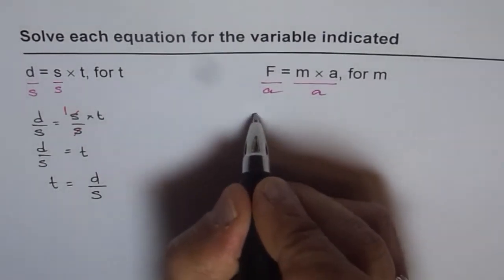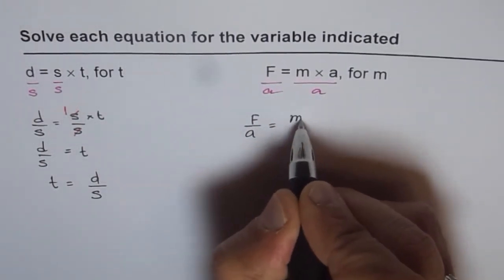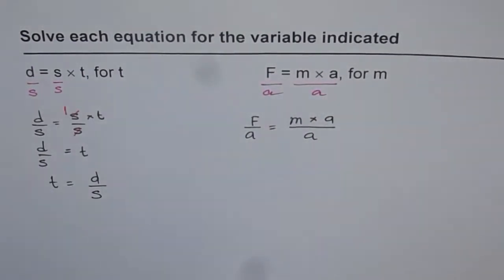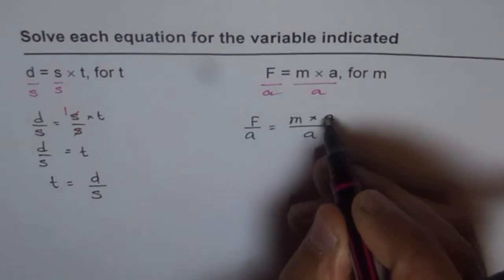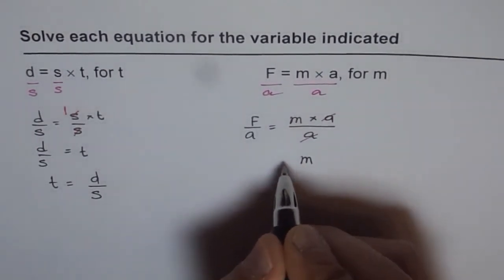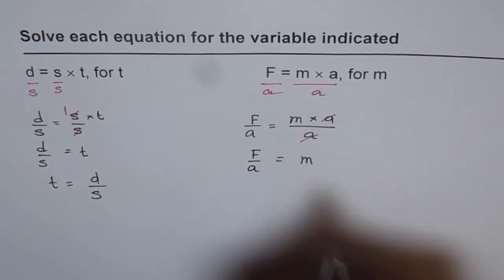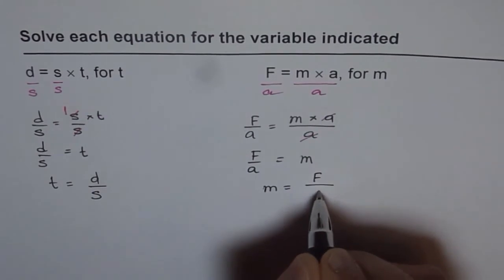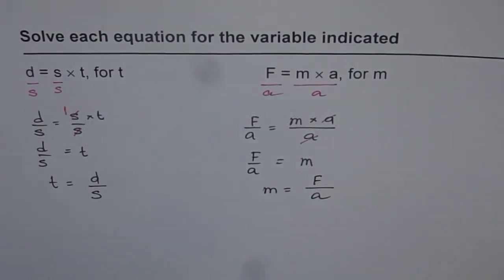We get F over a equals m times a over a. Now from here a and a will cancel out and we can isolate m. M will be equals to F divided by a. So we can write m equals F divided by a. So that is how we are going to isolate.